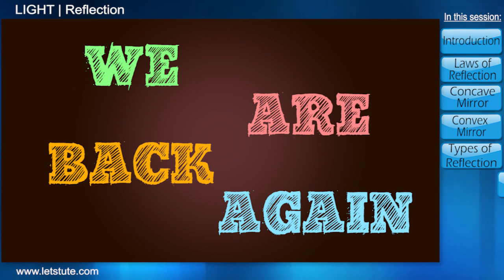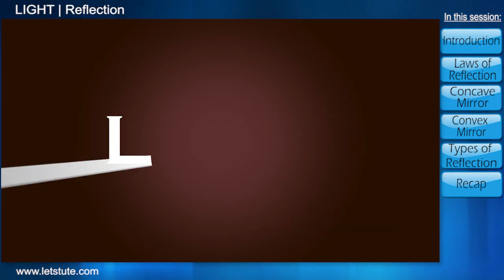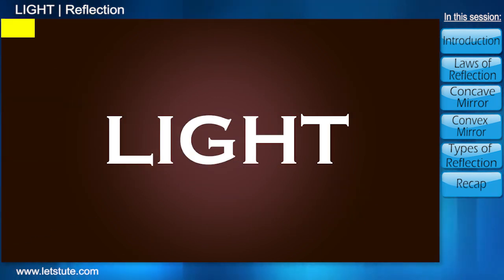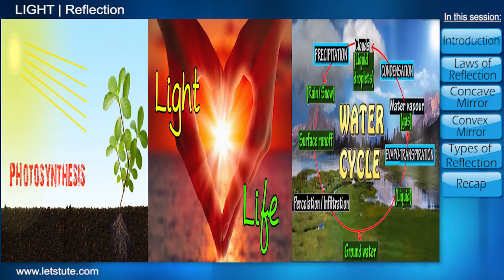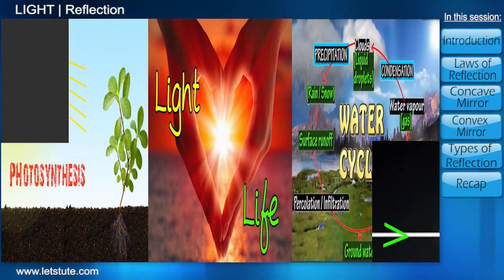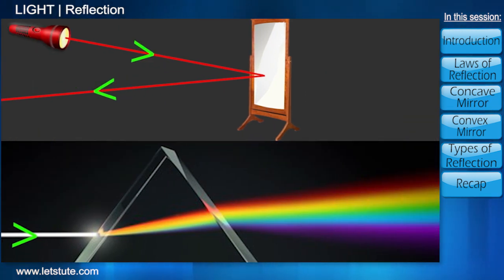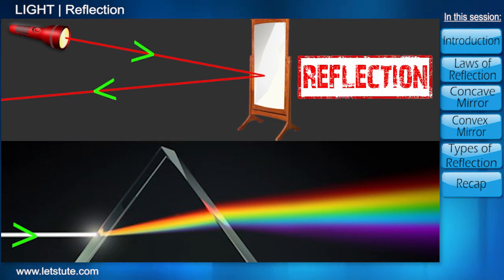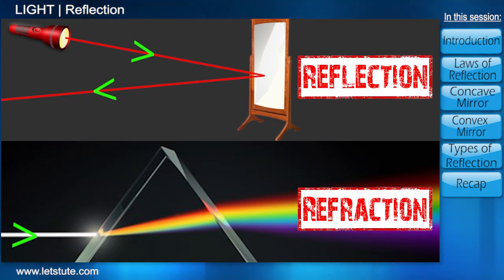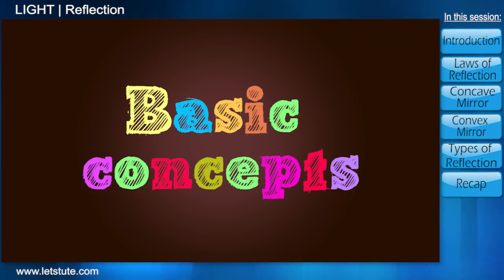Hey friends, we're back again with another interesting session on light. Previously, we saw what light exactly is and how it affects our lives. But before ending the session, we posted two questions regarding the behavior of light. One of our viewers responded with the correct answers — they are reflection and refraction respectively. We will learn about these behaviors in a bit, but before that, we need to understand a few basic concepts which will help us a great deal as we move ahead.